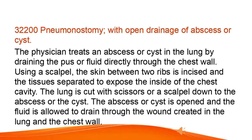Pneumonostomy with open drainage of abscess or cyst: the physician treats an abscess or cyst in the lung by draining the pus or fluid directly through the chest wall. Using a scalpel, the skin between two ribs is incised and the tissues separated to expose the inside of the chest cavity. The lung is cut with scissors or a scalpel down to the abscess or cyst, which is then opened and the fluid is allowed to drain through the wound created in the lung and chest wall.